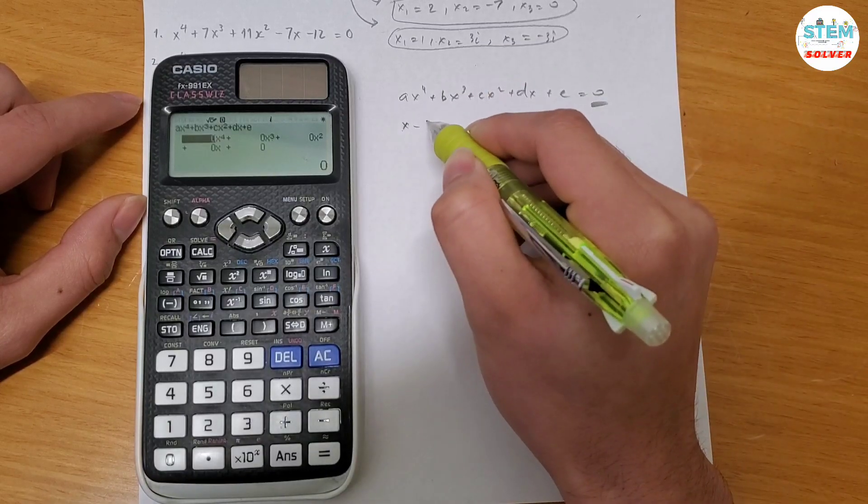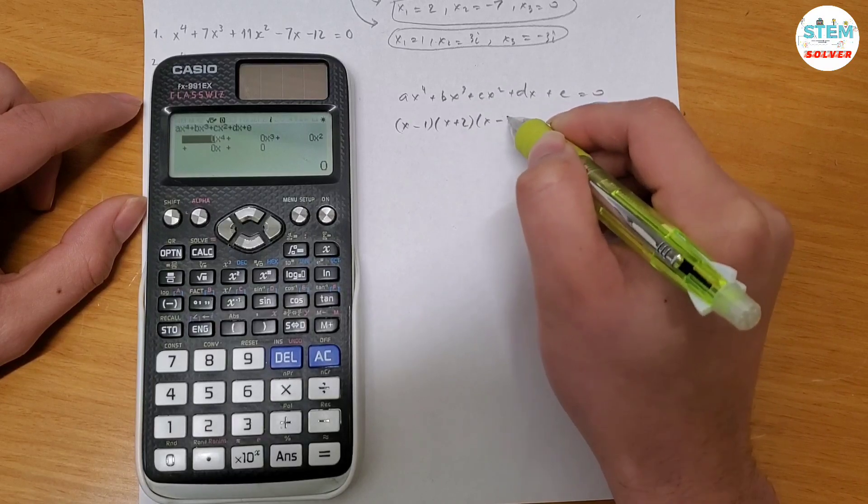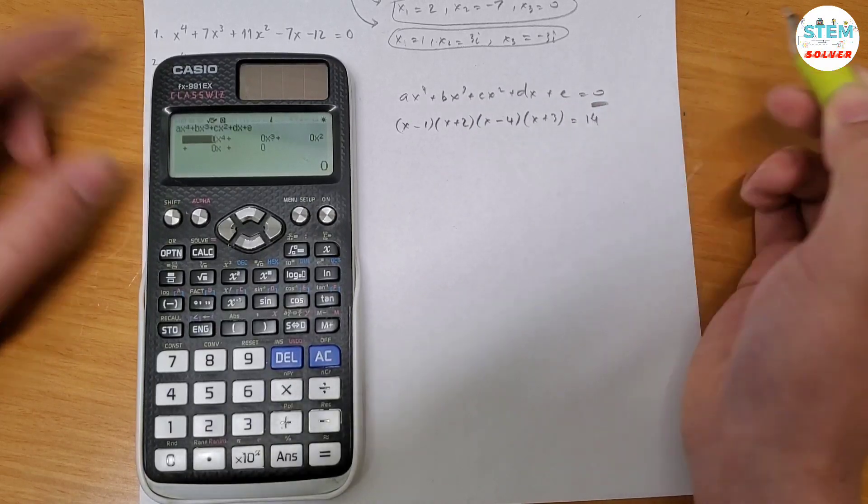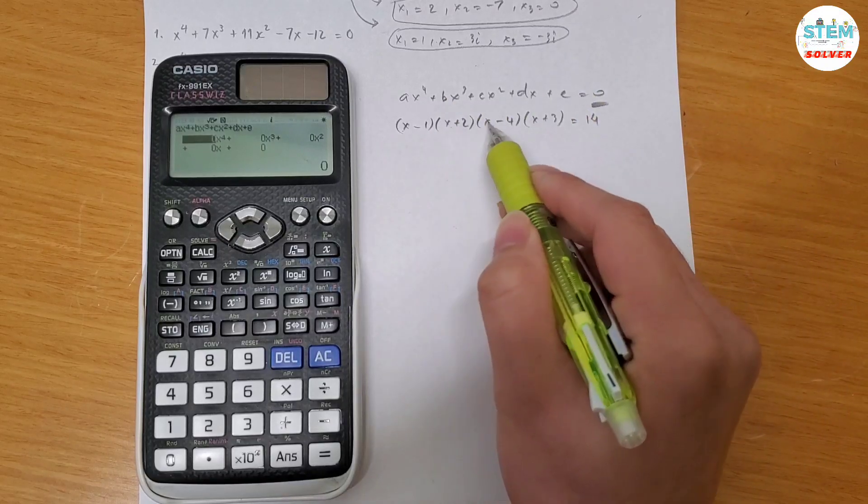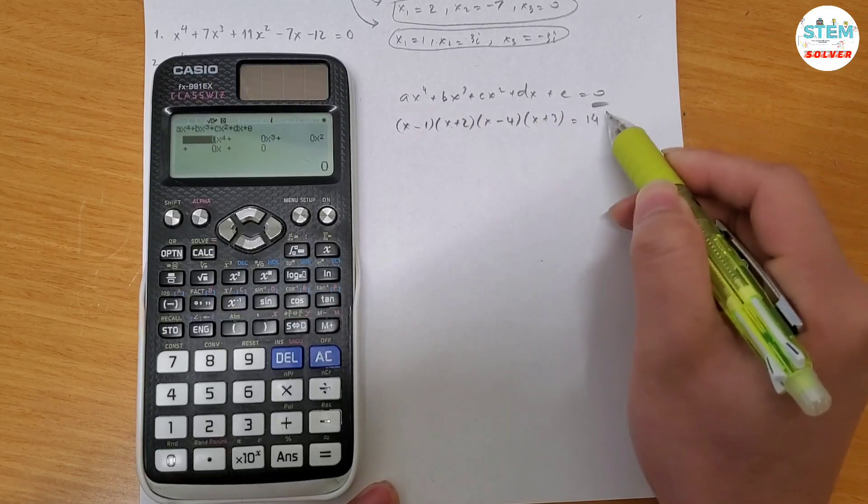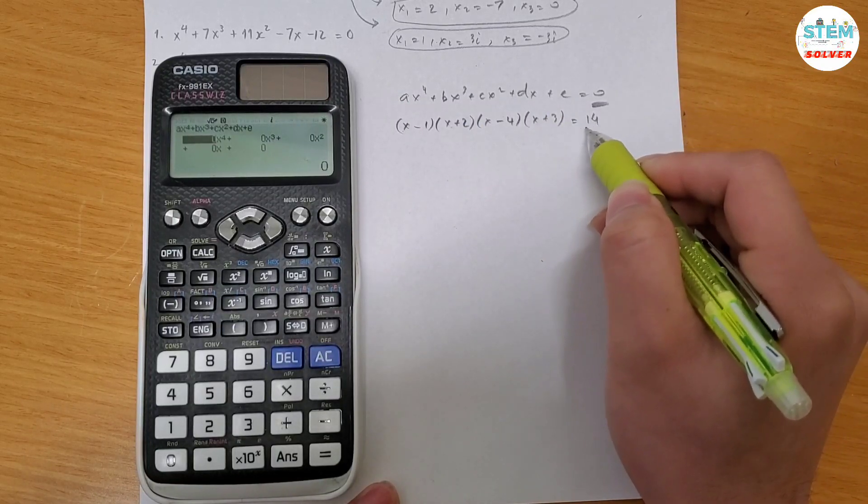So if you have it in form of x minus 1, let's say x plus 2 times x plus 2 times x minus 4 times x plus 3 equals 14, you have to multiply all these out to get to this form and on the right side you must convert it into 0.